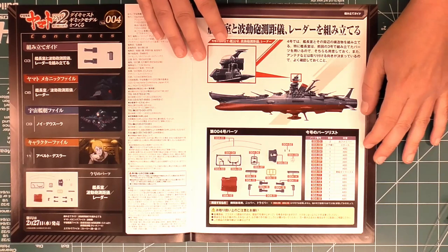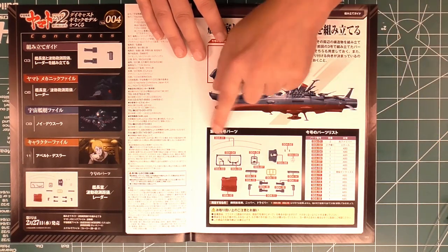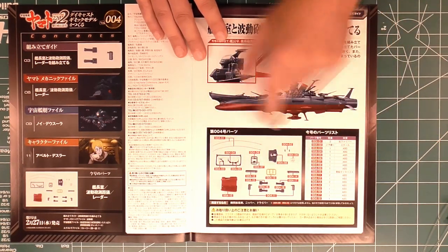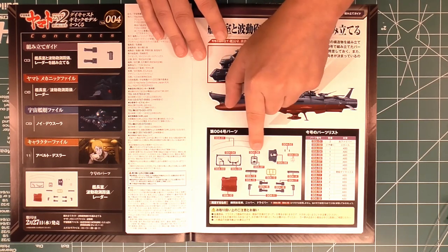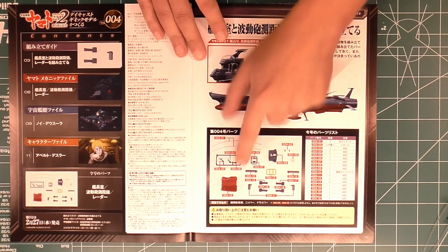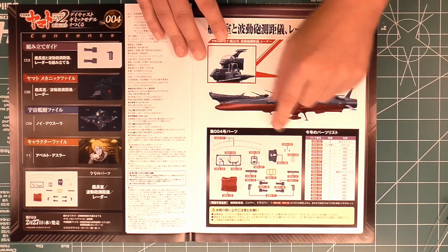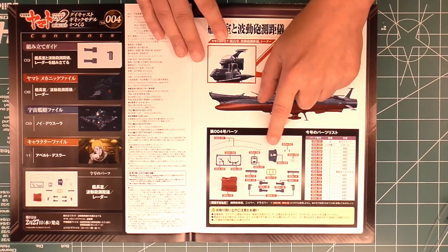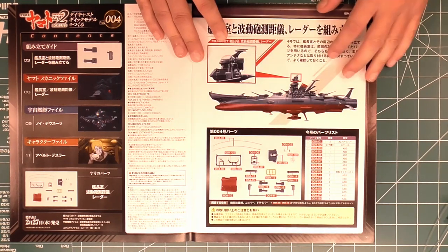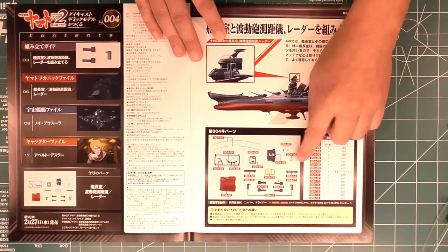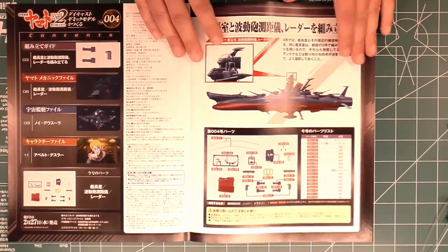Alright, so here's our magazine for this week. Our parts list. Most everything's plastic, we got some fiber, a couple of sprues, plastic parts, clear ABS, and a metal part that we won't be using. We won't be using the clear either.